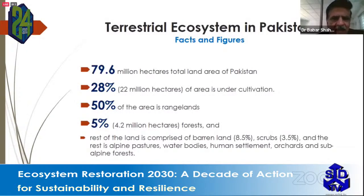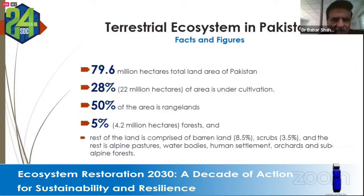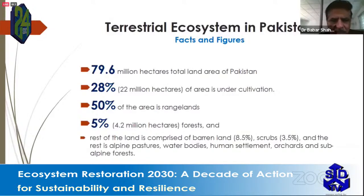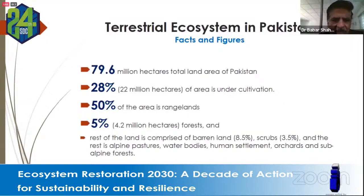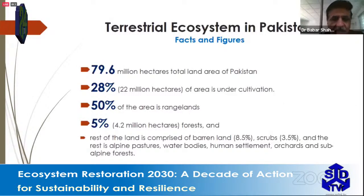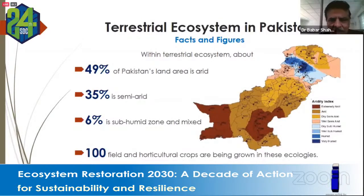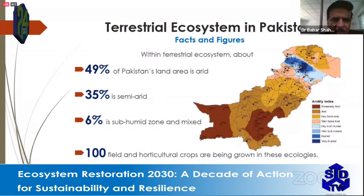Pakistan has about 79.6 million hectares of total land, with only 22 to 28 percent — roughly 22 million hectares — under cultivation. Fifty percent of Pakistan's land consists of rangeland, and only 5 percent of total land area is under some form of forest cover. The rest is barren land, scrubs, alpine pasture, water bodies, and human settlements. About 85 to 90 percent of Pakistan's land area is arid or semi-arid, with only 6 percent in the subhumid zone.